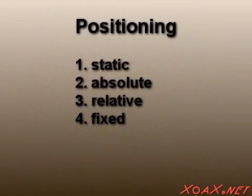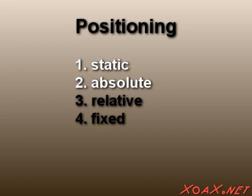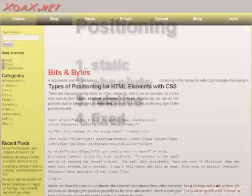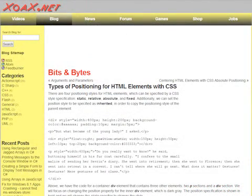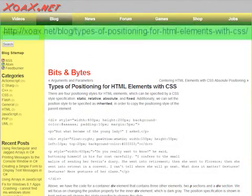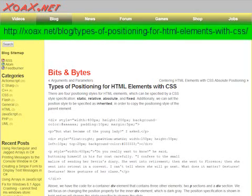There are four types of positioning in JavaScript, but only two that I will talk about: Static and Absolute. If you are interested in the others, you can read my CSS blog post entitled 'Types of Positioning for HTML Elements with CSS.' All of the element positioning comes to JavaScript via CSS.